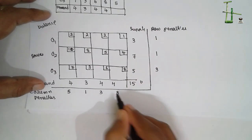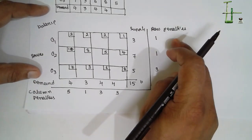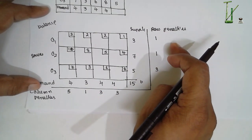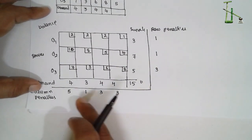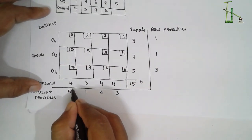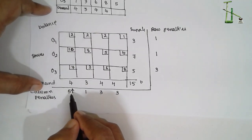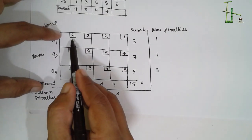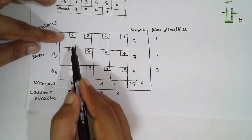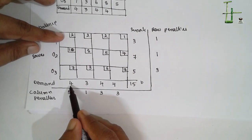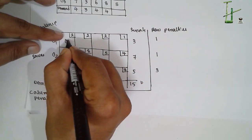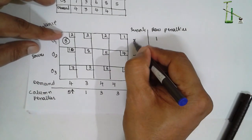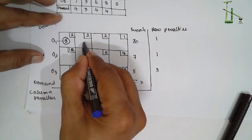For column penalties: Column 1 smallest is 2, next is 7, so 7 minus 2 = 5. Column 2: smallest is 2 and 3, difference = 1. Column 3: smallest is 2, next is 5, difference = 3. Column 4: smallest is 1, next is 4, so 4 minus 1 = 3. Now select the largest among all row and column penalties — the largest value is 5. Show the arrow here; in that column select the smallest value, which is 2. Supply is 3, demand is 4, so write 3, and supply becomes 0. Demand reduces to 1, and we eliminate this row.